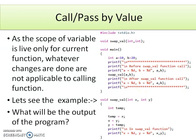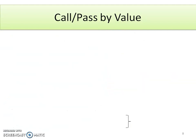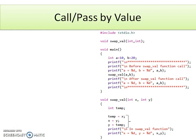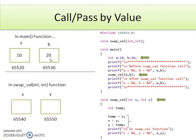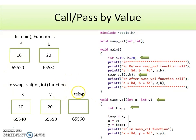Can you think about what will be the output of this program? Let me explain how this program gets executed. In main, two variables a and b are declared and initialized with values 10 and 20. In swapVal, two variables x and y are declared, and the values of a and b are passed by call by value. A temp variable is declared of type integer. The next statement assigns the content of x to temp. Next, the value of y is assigned to x, so x now holds 20 — previously it was 10.